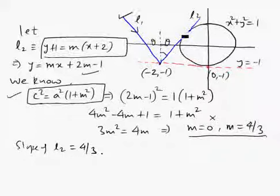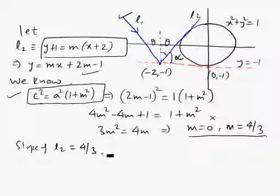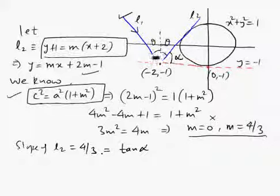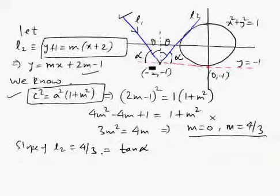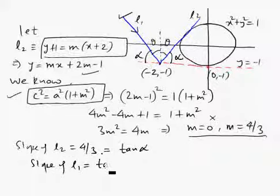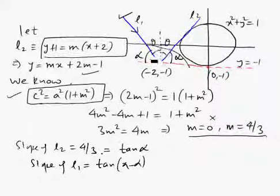If the angle the reflected ray makes is alpha, then by definition tan(alpha) equals 4/3. Since angle of incidence equals angle of reflection, the incident ray makes the same angle alpha with the tangent line. The sum of the two angles on one side is 90°, so the incident ray makes an angle of (π − alpha) with the reference. Therefore, the slope of L1 equals tan(π − alpha), which is minus tan(alpha), giving slope of L1 equals minus 4/3.